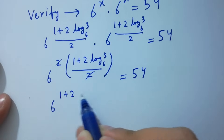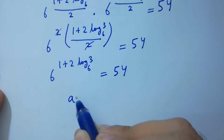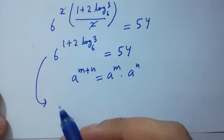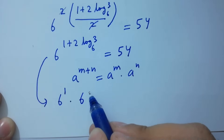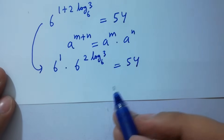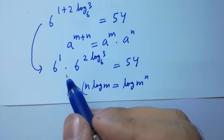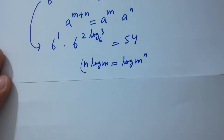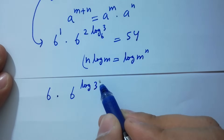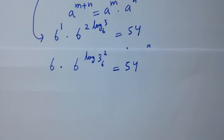We get 6 to the power 1 plus 2 log 3 to the base 6 equals 54. Using a to the power m plus n equals a to the power m times a to the power n, it becomes 6 to the power 1 times 6 to the power 2 log 3 to the base 6. Then using n log m equals log m to the power n, we have 6 times 6 to the power log 3 squared to the base 6 equals 54.